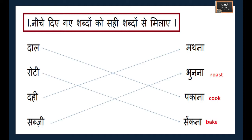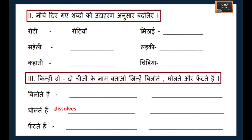In the matching exercise: 'Dal pakana' means cooking, so dal will be cooked. Roti will sink. 'Ramming' means baking. 'Dahi matna' means churning. 'Subji bunna' means roasting, so subji will be roasted.